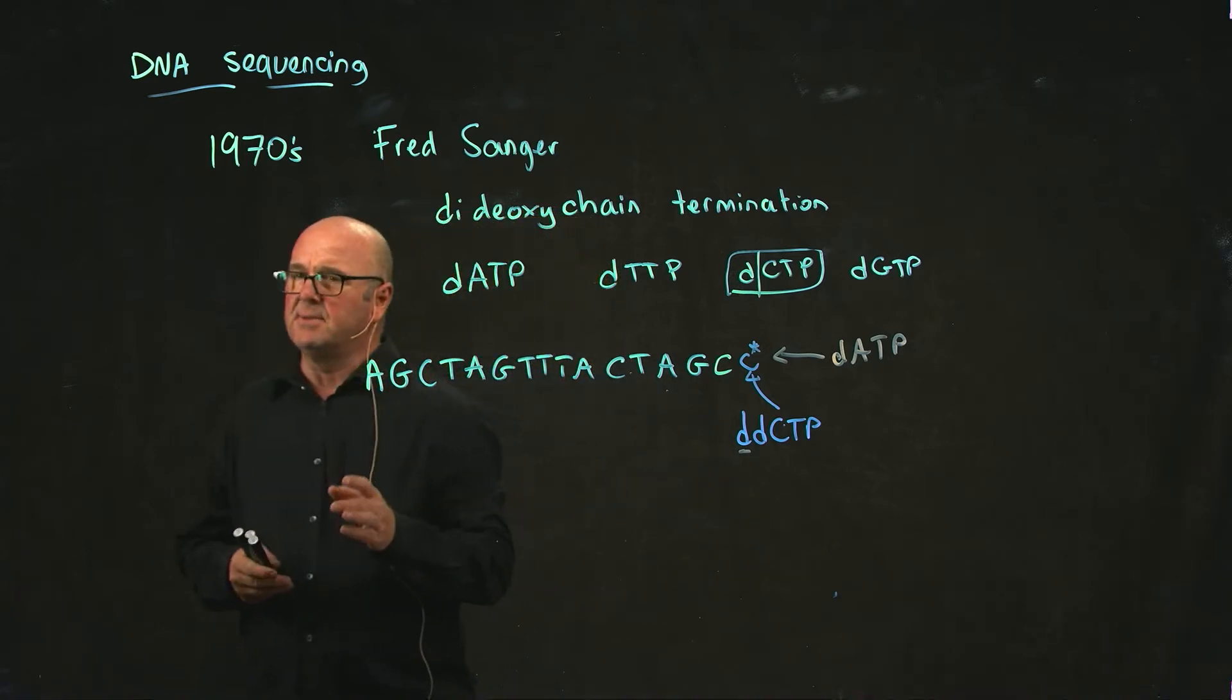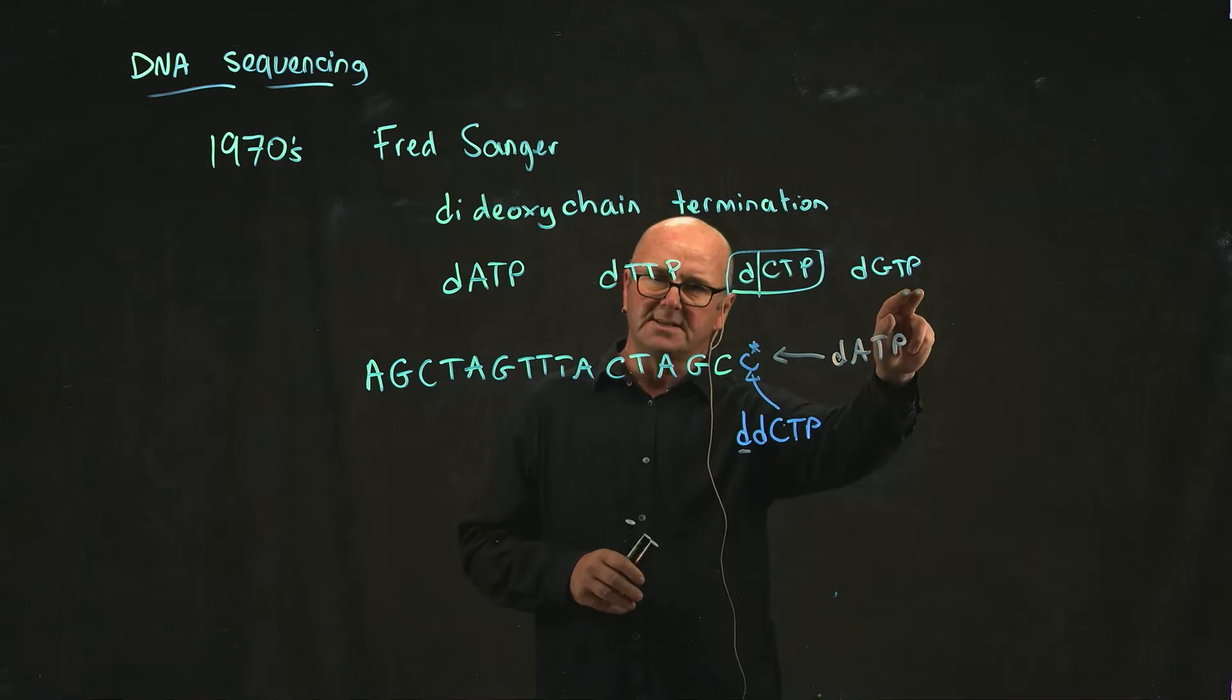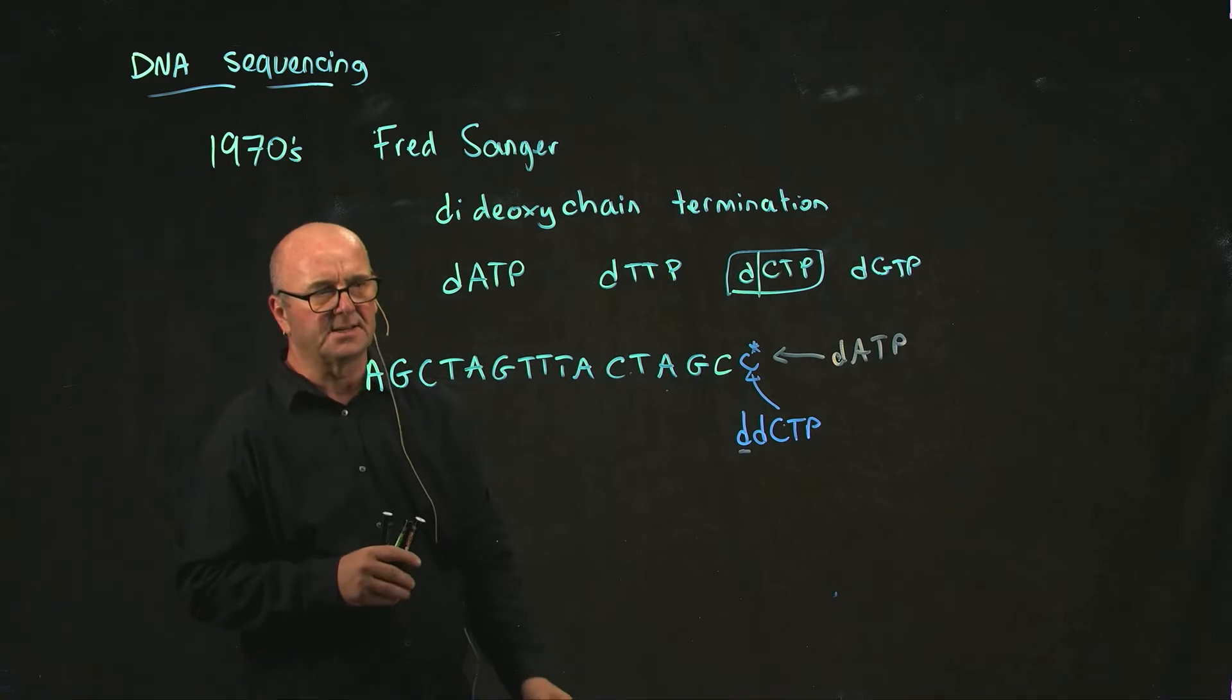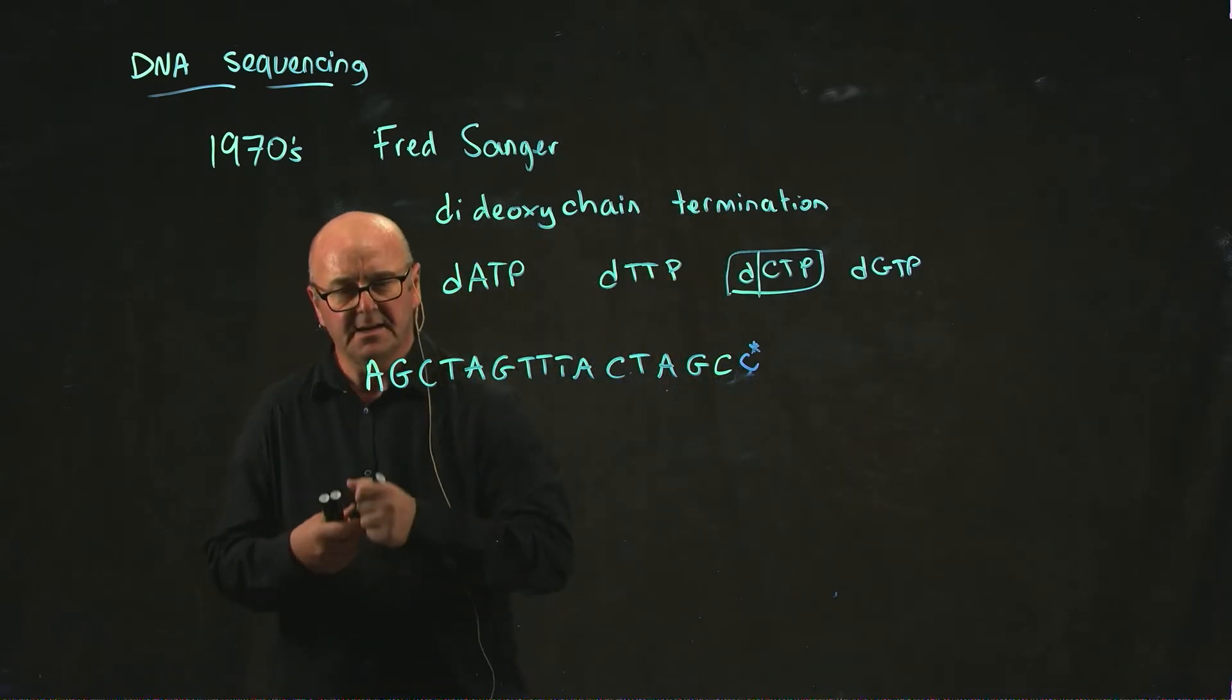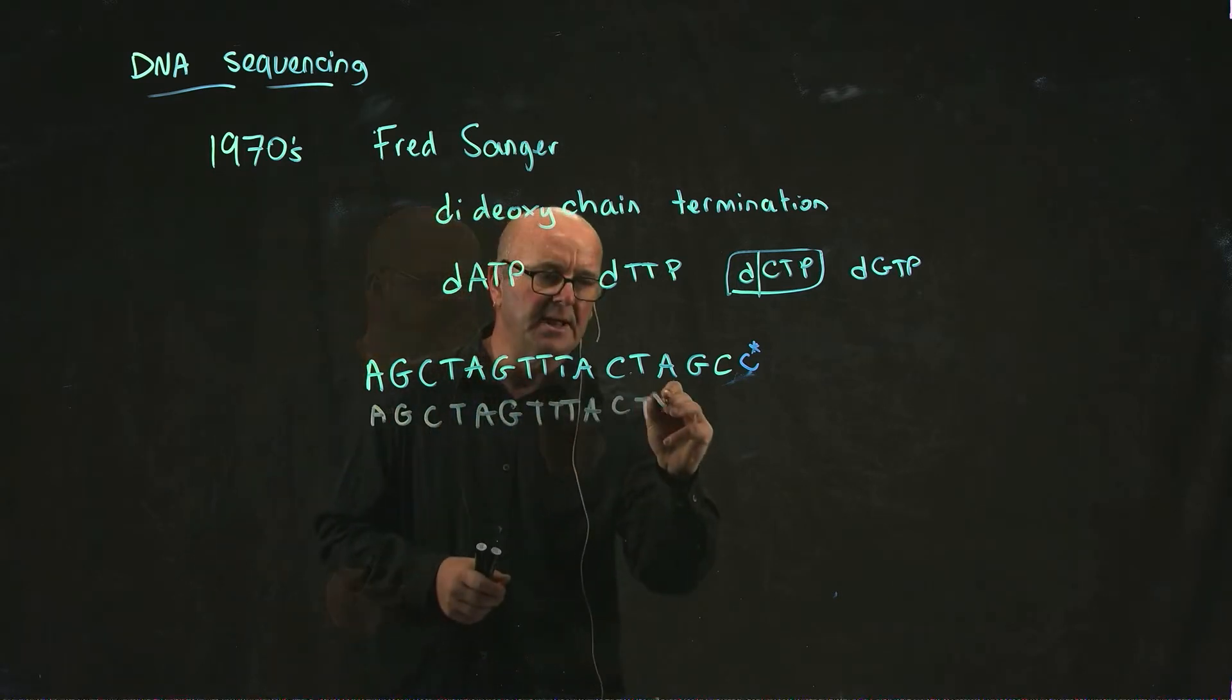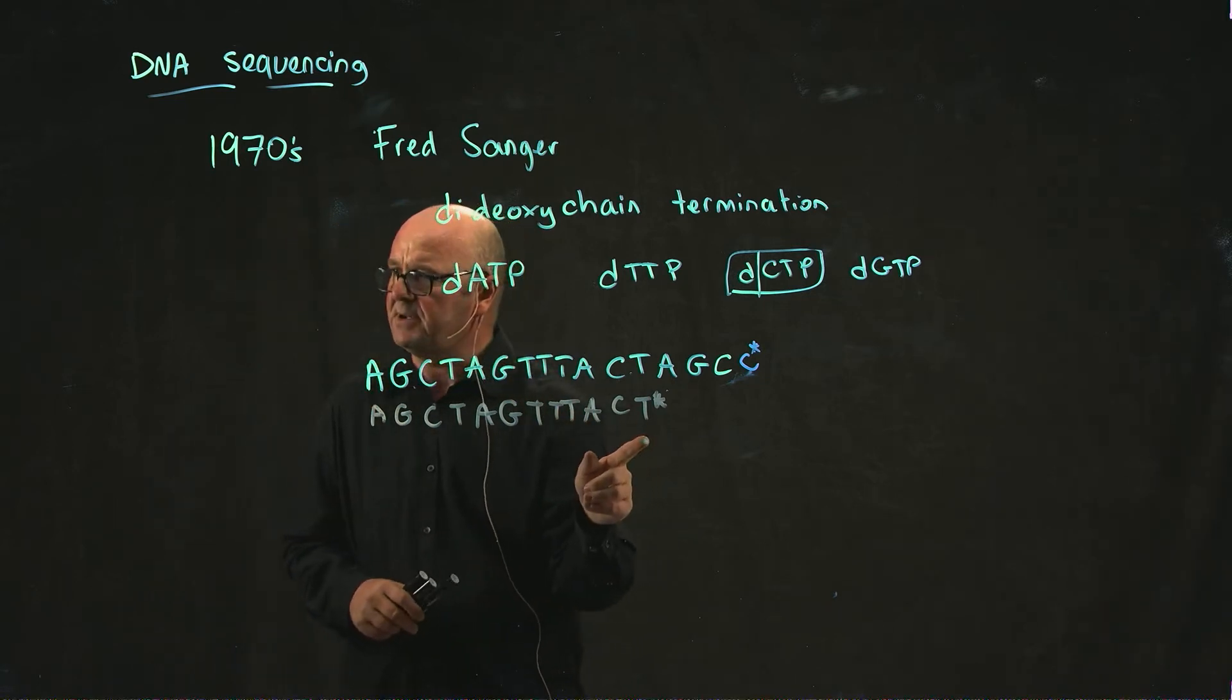The idea with chain termination is that you mix together your normal dNTPs that you need to synthesize DNA, and you mix in a small amount of the dideoxy NTPs that cause the chain to stop growing. And so as you replicate the DNA, sometimes as we're coming along...